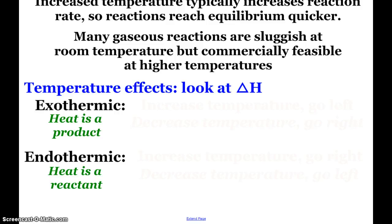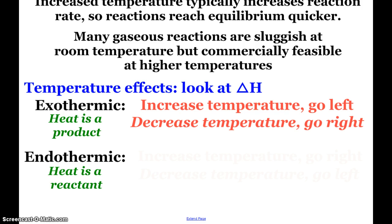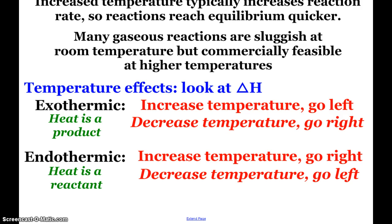When we are looking at temperature effects, we're looking at delta H. So if we have an exothermic reaction, in my mind, in the reaction, that means heat is a product. So if we increase temperature, that basically means you're adding a product. So the reaction would go back to the left. If we decrease the temperature, that means we're taking the product away. That's going to force the reaction to the right. Endothermic, heat is a reactant. It's going in. So if I increase temperature, am I adding the reactant? It's going to force it to the right. Decrease the temperature, bring it back to the left.